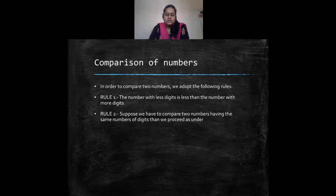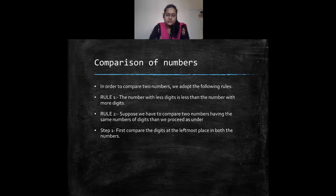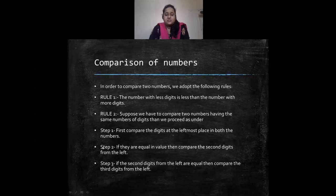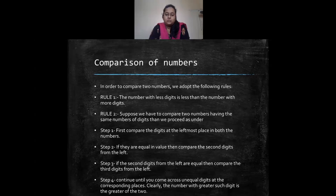If both numbers have the same number of digits, you follow different steps. First, compare the digits at the leftmost place. Whichever number has the greater digit at the leftmost place is the greater number. If those are equal, move on to the second digit from the left, then the third, and so on until you reach an unequal digit.